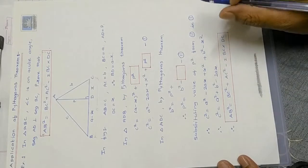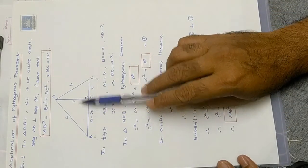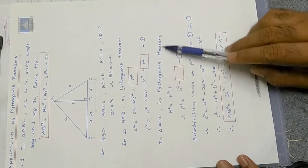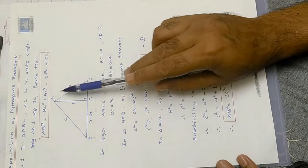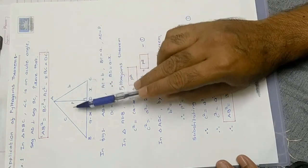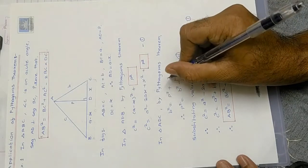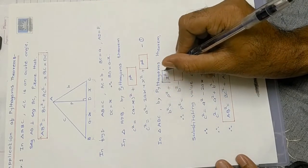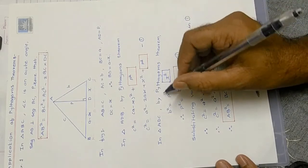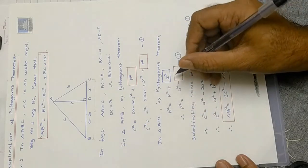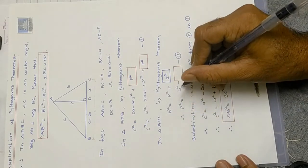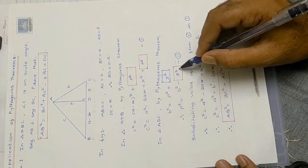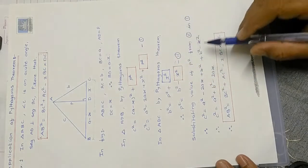Now apply Pythagoras theorem again in triangle ADC. Here AC is the hypotenuse, so: b² = p² + x². We need the value of p², so taking x² to the left-hand side: p² = b² − x². This is equation number two.